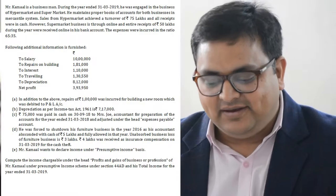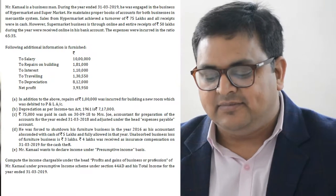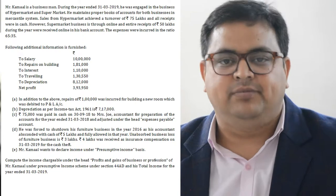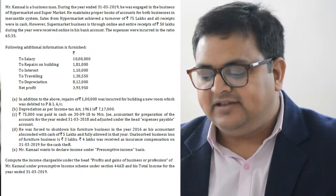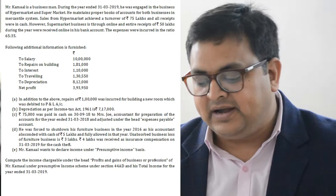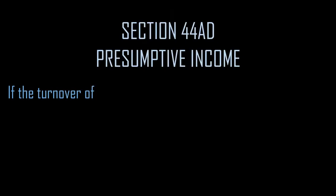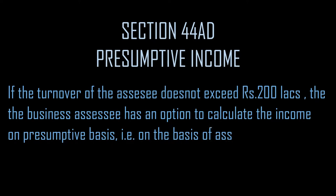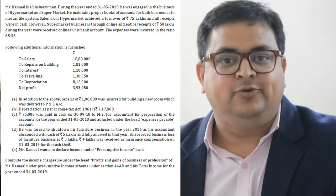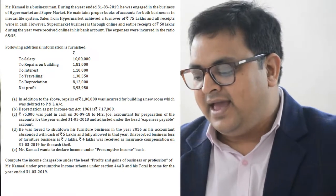Mr. Kamal is a businessman. During the year ended 31st March 2019, he was engaged in the business of hypermarket and supermarket - he has two businesses. He maintains proper books of accounts for both businesses on mercantile system, so income can be derived from books of accounts. There is another route - presumptive income - if turnover is not more than ₹200 lakh. Sales from hypermarket achieved a turnover of ₹75 lakh, which is under ₹200 lakh.